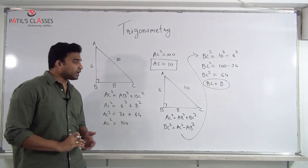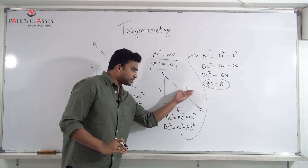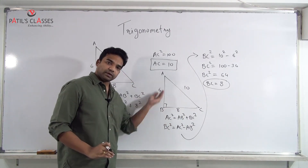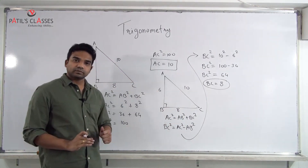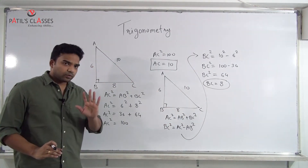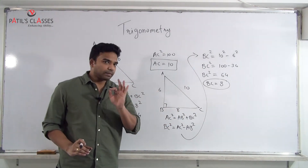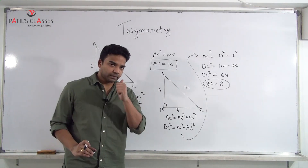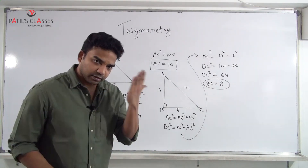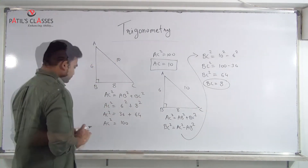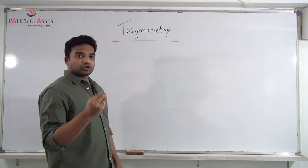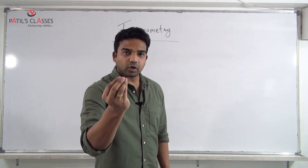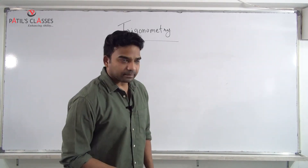At times they will give you AC = 10, BC = 8, and ask you to calculate AB. That is very easy and manageable. Let us now start with the next question — write down one question on Pythagoras theorem.